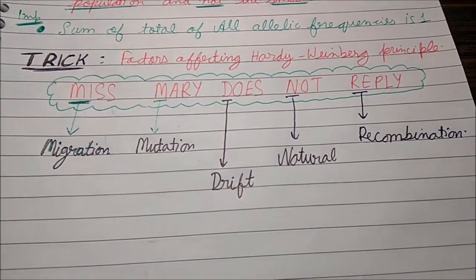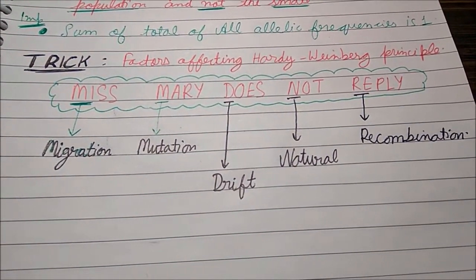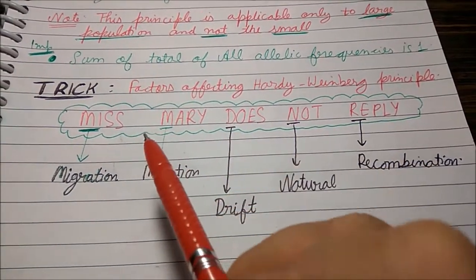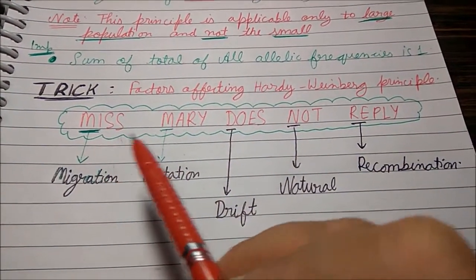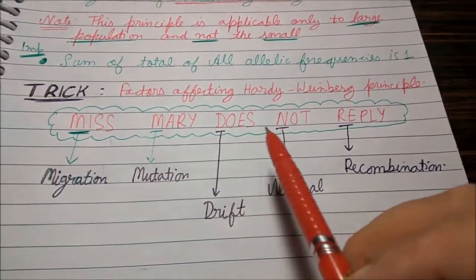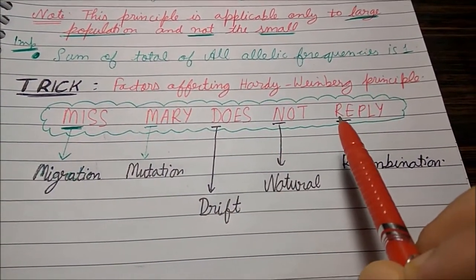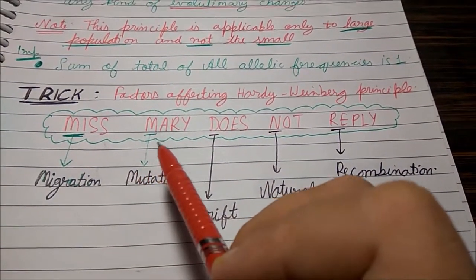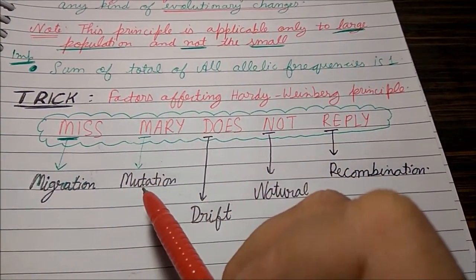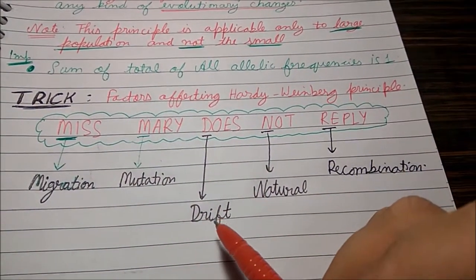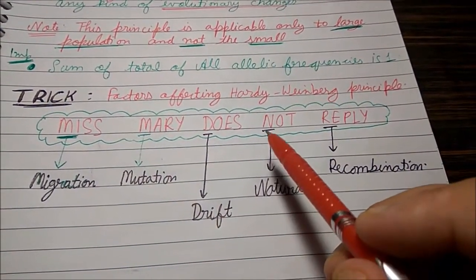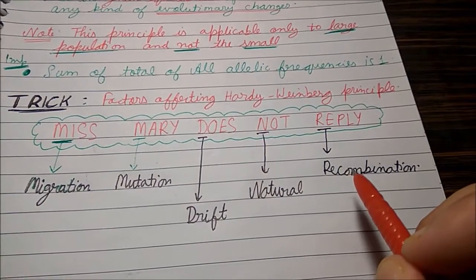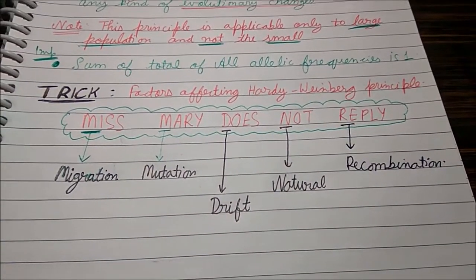Now let's see the trick we need to use here. Our trick is: Miss Mary does not reply. M for migration, M for mutation, D for drift, N for natural, R for recombination.